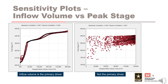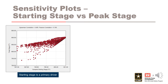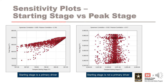The second sensitivity plot shows the correlation between starting stage and peak stage. In the example on the left, the correlation is relatively high, which means starting stage influences the peak stage — higher starting stages generally result in higher peak stages for this dam. The plot on the right is for a different dam where the correlation is relatively low, which means that the starting stage does not have a large impact on the peak stage.